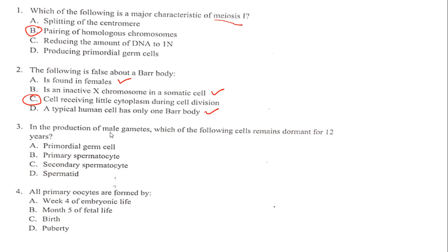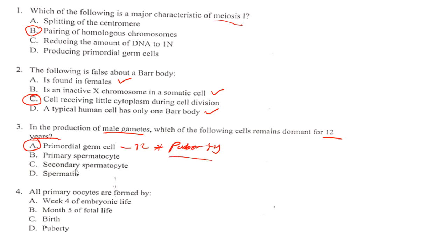In the production of male gametes, which is spermatogenesis, which of the following cells remain dormant for 12 years? The primordial germ cells are the ones capable of staying dormant up to 12 years. When we talk of 12 years, we are talking about puberty — most males reach puberty by 12 years, and that's when the primary spermatocytes begin production. The only cell among the four options that can reach puberty is the primary germ cell.